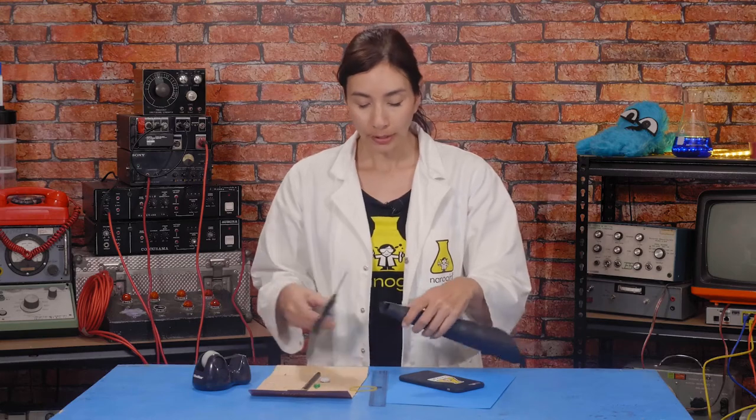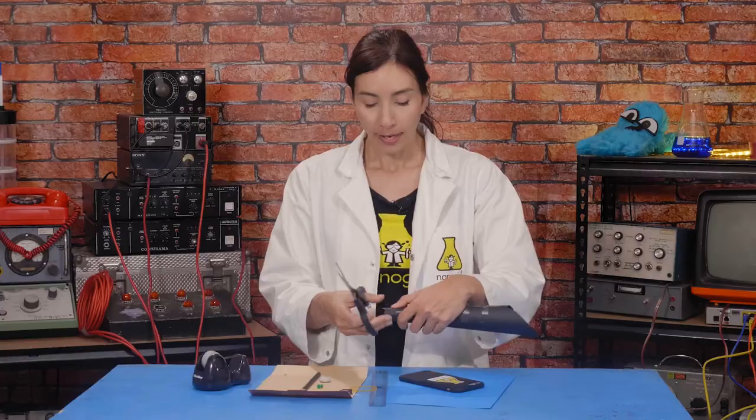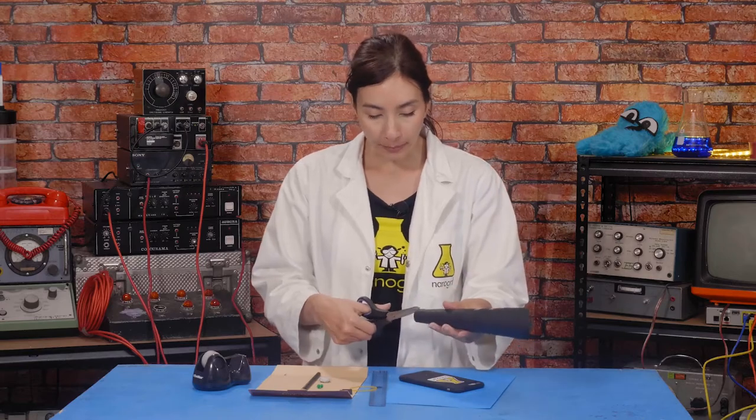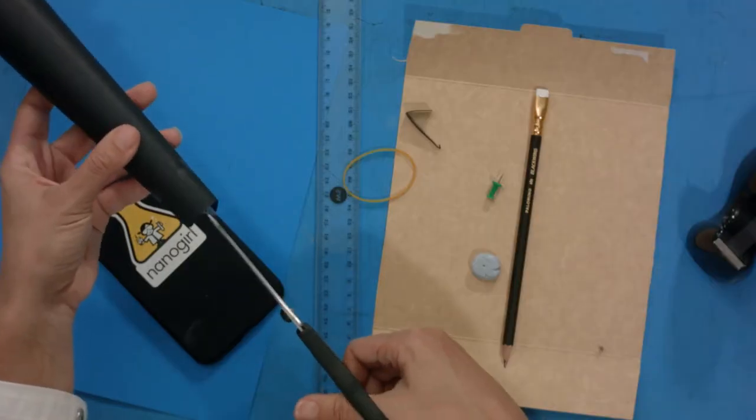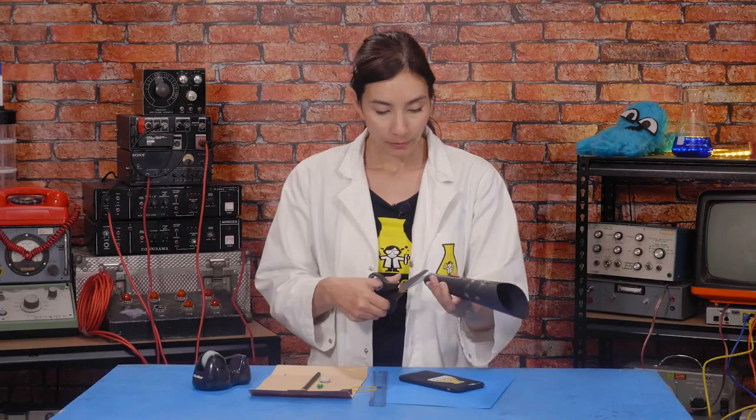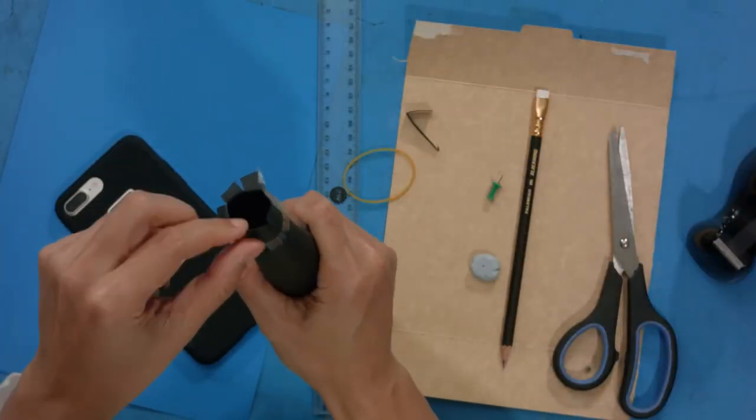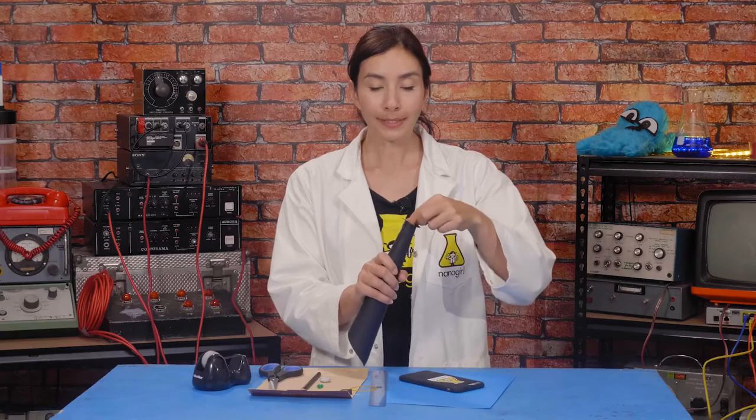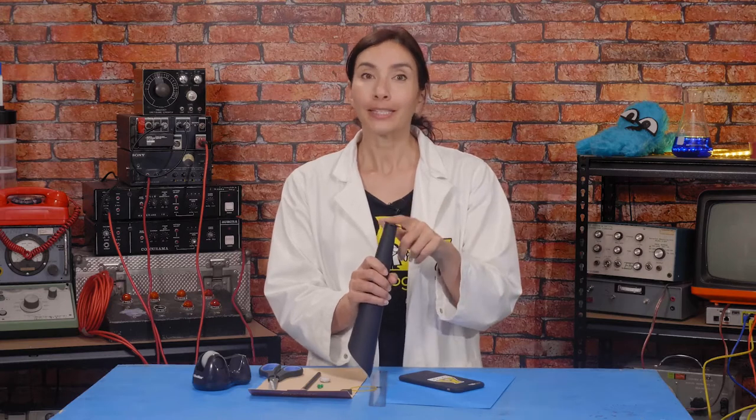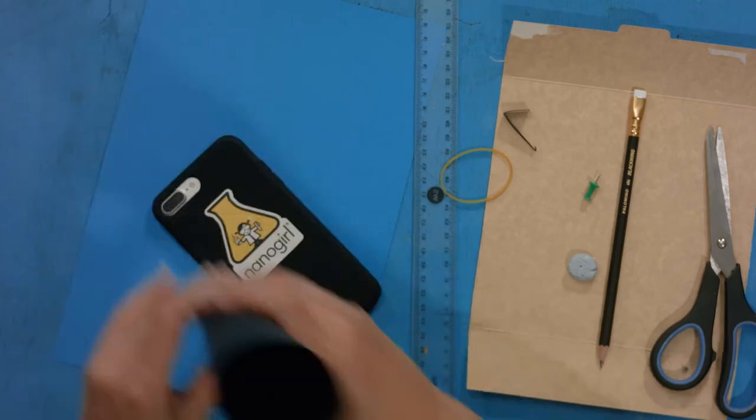Next you're going to snip across the bottom so it's flat. And then you're going to put little snips at the bottom narrow end here to make some tabs. And when you've got enough, you're going to fold those tabs outwards. Now make sure that this narrow hole that you've made here is bigger than the diameter of your torch.